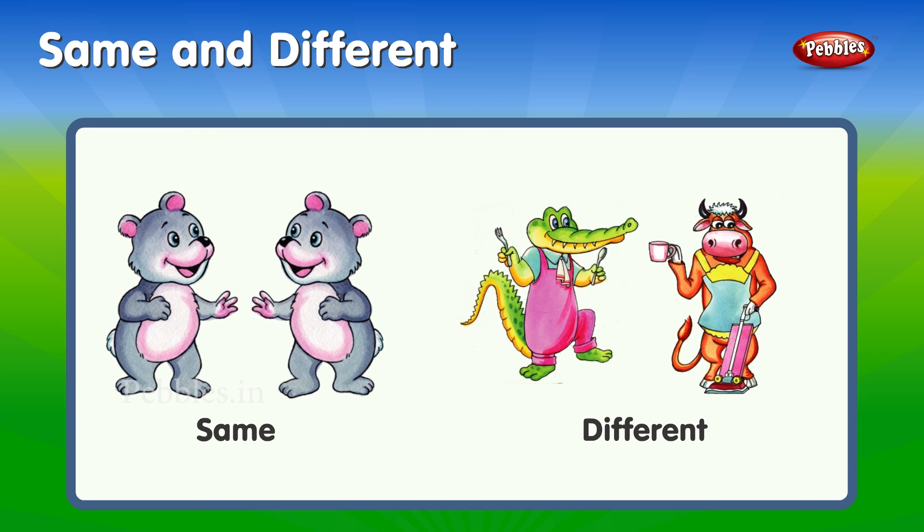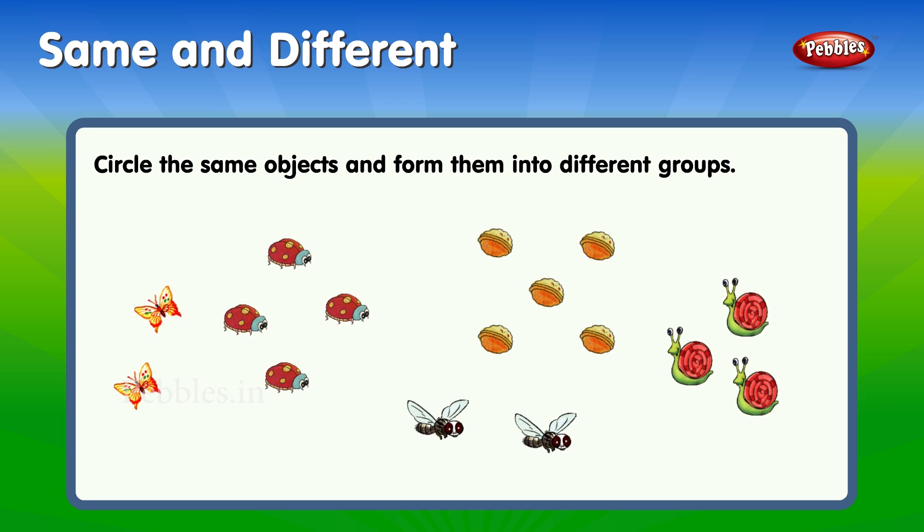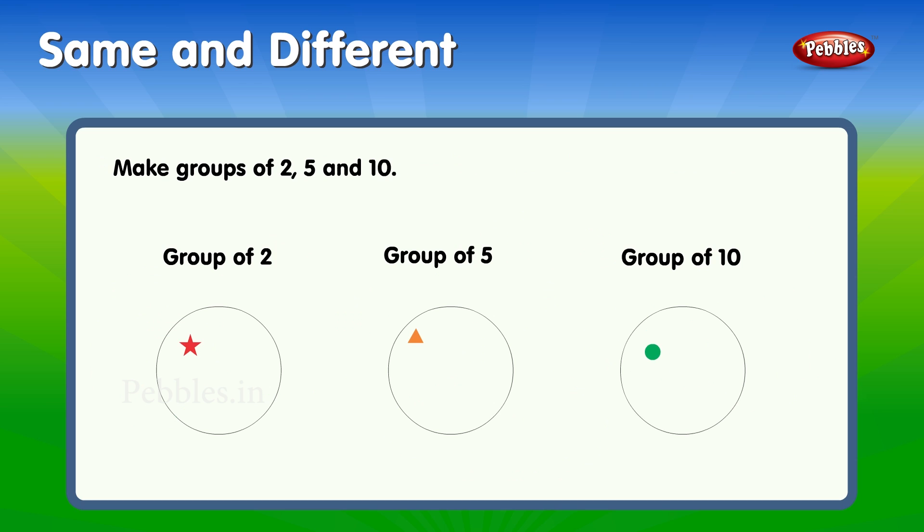Same and different. Circle the same objects and form them into different groups. Make groups of 2, 5, and 10.